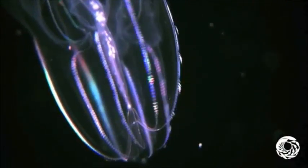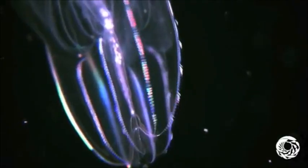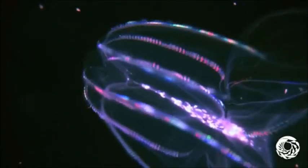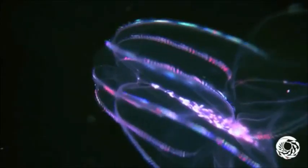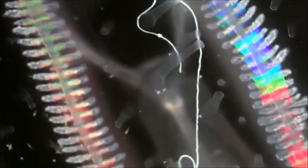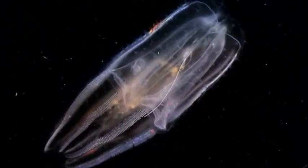All comb jellies are hermaphrodites. Eggs and sperm are cast into the water and fertilization takes place. Their larva grows rapidly as their entire lifespan is only around a few months. A full-size comb jelly can range from a few millimeters to over four feet.